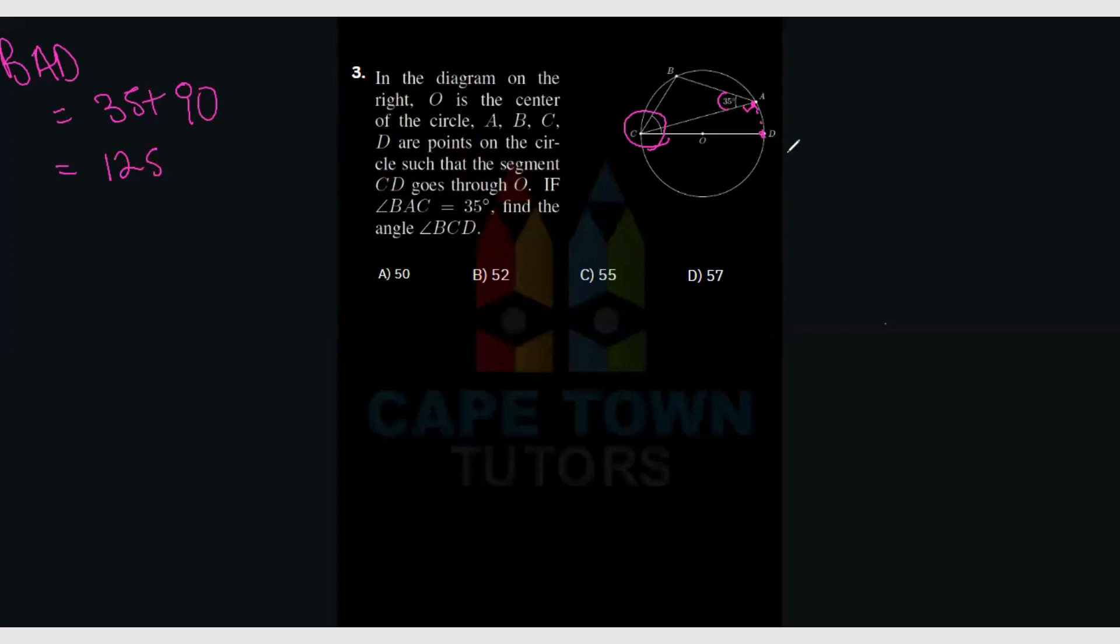Now this BAD, since it is a cyclic chord, the opposite angle to it would have to add up to 180 degrees. So then to work out BCD, we would have to say angle 180 minus BAD.